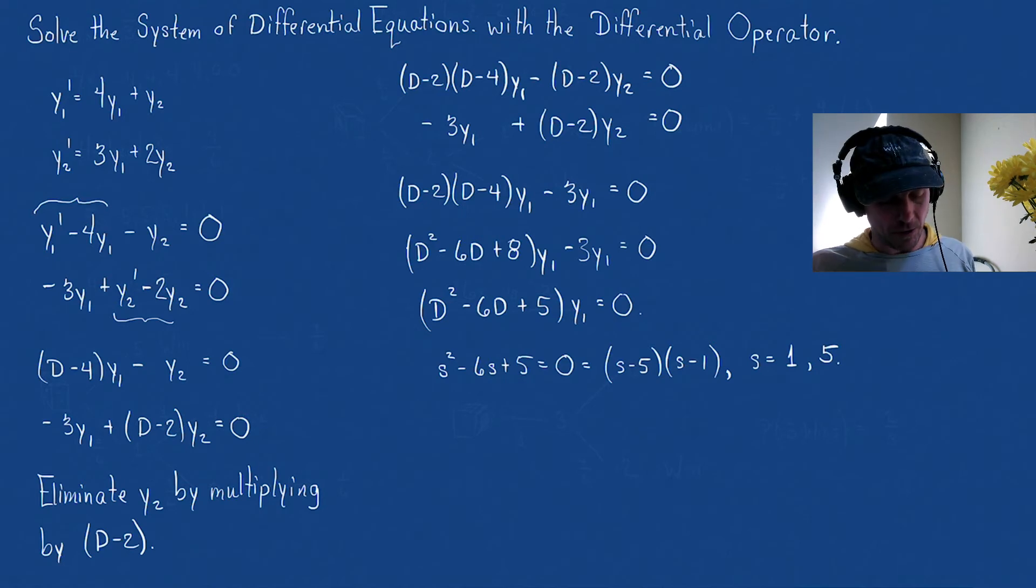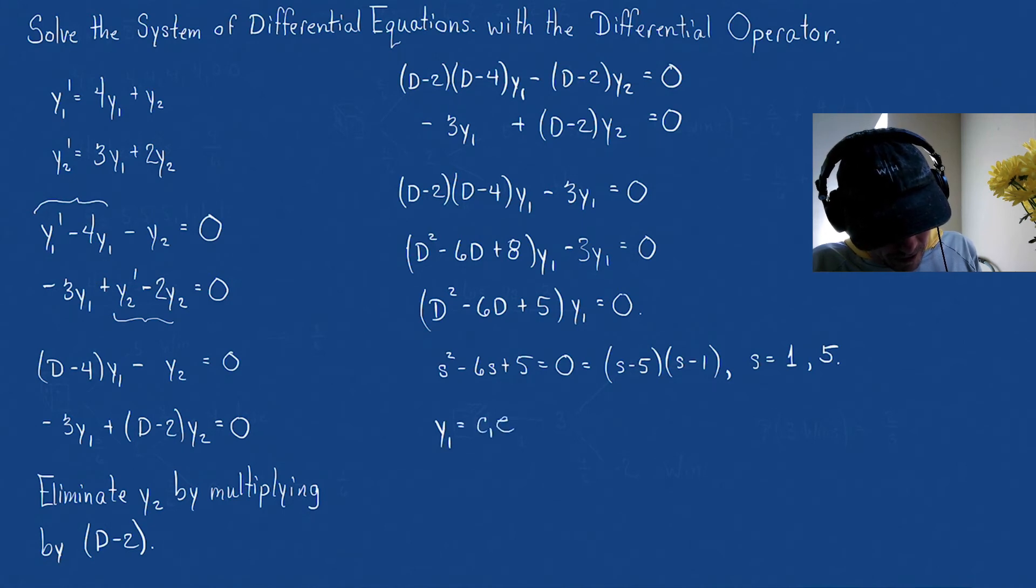Now we can write our solution. So our solution comes from this. You can use either of the two equations. In this case, though, I got ahead of myself. Let me write the solution. So here's what we have. So we've just found now that y1 = c1e^t + c2e^(5t). There we go.